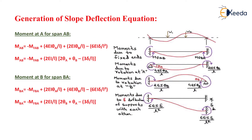Now we need to generate the slope deflection equation, for which we consider a beam with two supports acting at its ends and having point loads w1 and w2. We need to consider all possibilities so that we can generate the slope deflection equation.